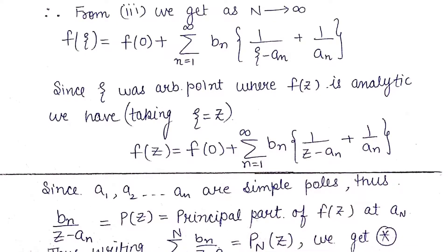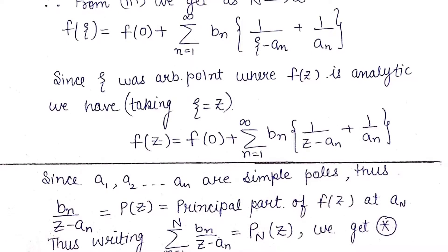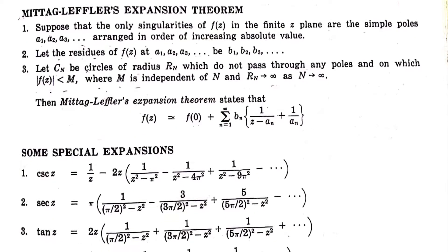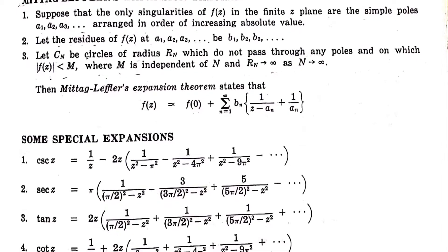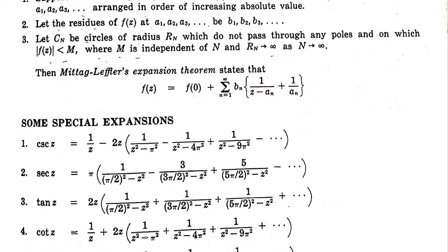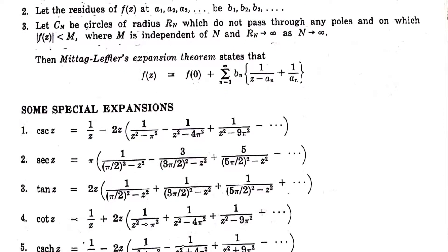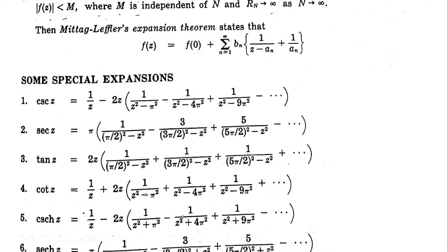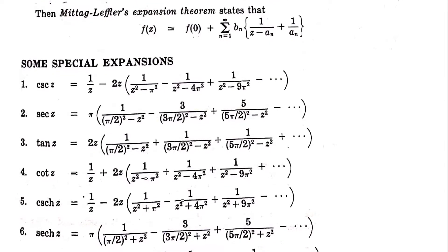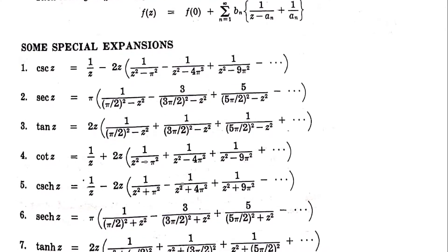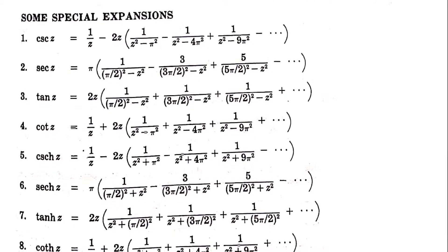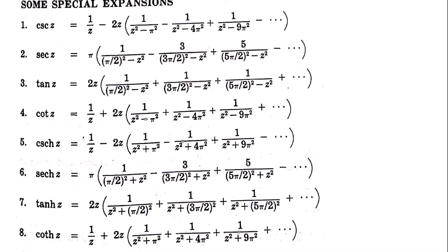Since ζ was an arbitrary point where f(z) is analytic, we can replace ζ by z to obtain the required result. In our next lecture, with the help of Mittag-Leffler's expansion theorem, we will obtain the expansions of some trigonometric and hyperbolic functions. Note that sin z, cos z, sinh z, and cosh z are not in the list because they are entire functions, and for entire functions we use Taylor's theorem for expansion. Go through the proof of the theorem — take care and thank you.